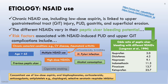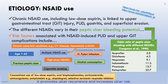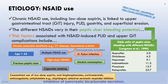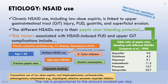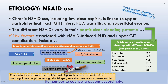Cigarette smoking impairs ulcer healing, promotes ulcer recurrence, and increases ulcer risk. Possible mechanisms include mucosal ischemia, inhibition of pancreatic bicarbonate secretion, and increases in gastric acid secretion. The risk is proportional to the amount smoked per day. Remember to counsel patients accordingly.